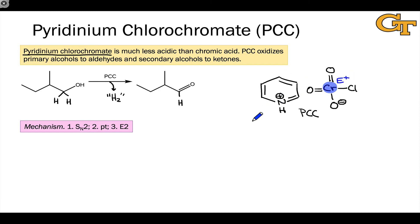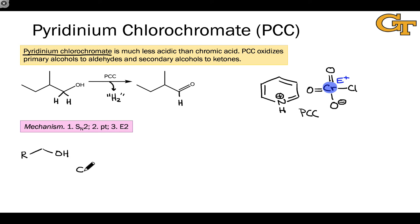The pyridinium ion, while it looks acidic, is not acidic enough to protonate an alcohol oxygen. However, the chromium atom at the center of chlorochromate is definitely electrophilic enough to be attacked by the nucleophilic alcohol oxygen. Let's look now at a detailed mechanism for this process. The electrophilicity of the chromium atom in chlorochromate is key.